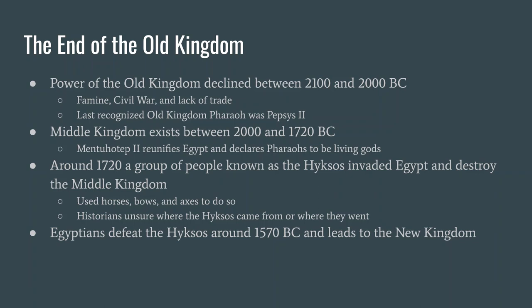There's not a whole lot to say about the Middle Kingdom other than Mentuhotep II declares 'I am a living god' and creates the idea of the pharaoh — a living god amongst men. So before Mentuhotep II, the kings were just powerful kings; after him, the kings are known as pharaohs and pharaohs are living gods. Then around 1720 BC, a group called the Hyksos — whose origins we don't actually know — invade Egypt and destroy the Middle Kingdom. They use horses, bows, arrows, and axes — all things the Egyptians didn't have — and they conquer.